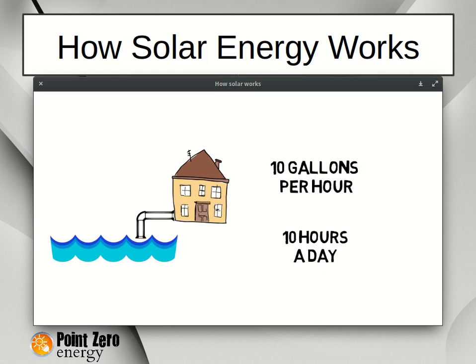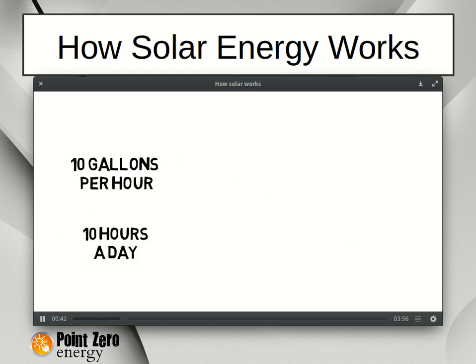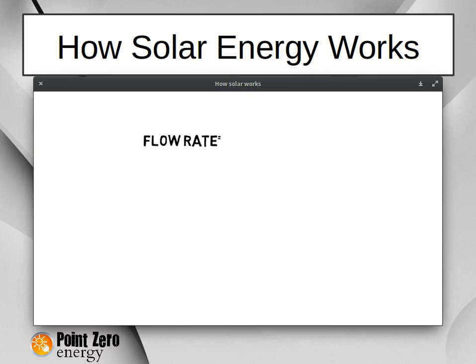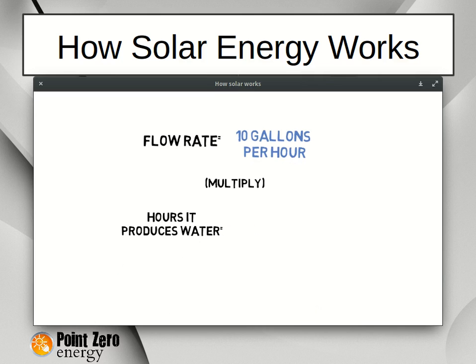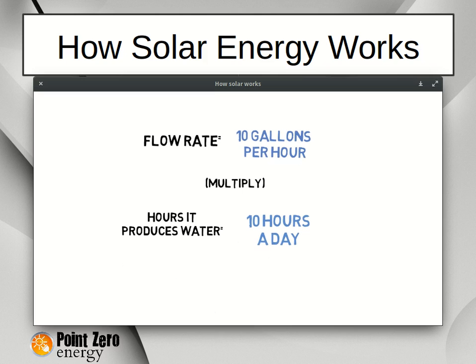The spring flows on an average of 10 hours per day. So we ask the question: will this spring produce enough water for your shower every day? To figure out how much water our spring will produce, we simply take the flow rate of 10 gallons per hour and multiply by the hours it produces water in the day — 10 hours.